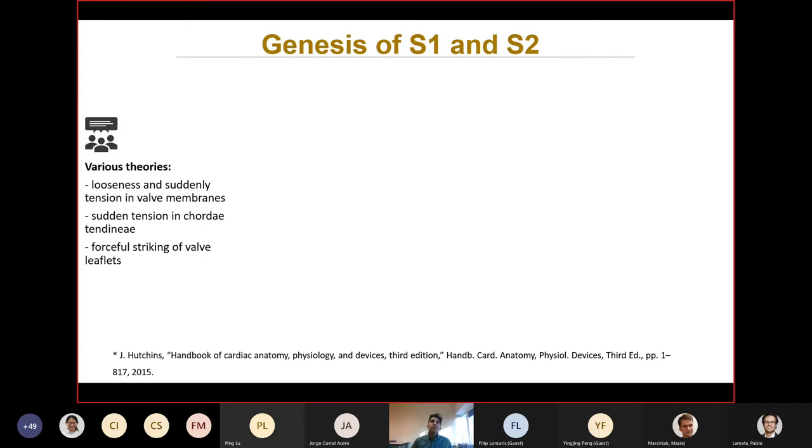There are various theories about the genesis of first and second heart sound. It is postulated that looseness and sudden tension in valve membranes generate S1 and S2. But the widely accepted theory is that heart sounds are acoustic vibrations that are generated by mechanical interactions of the cardiohemic structures, including valve, myocardium, and blood mass.